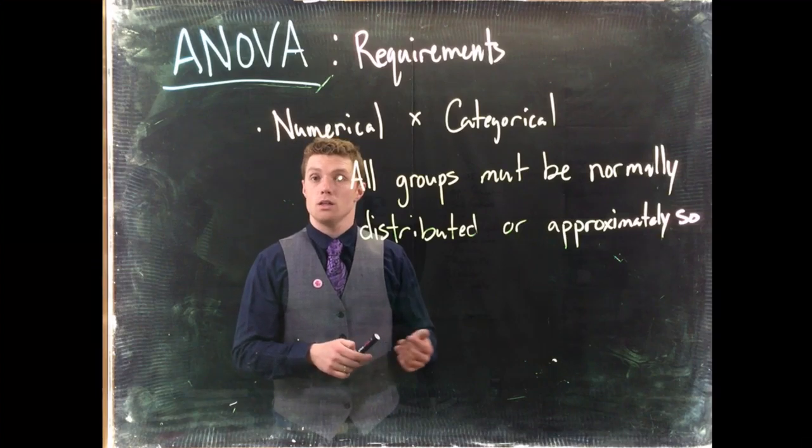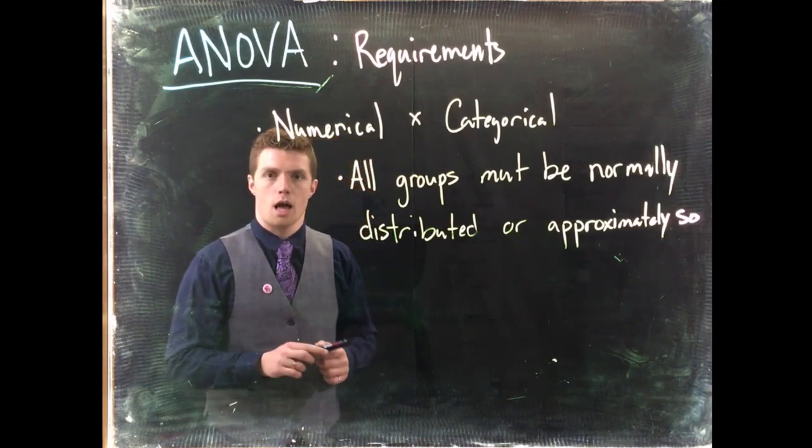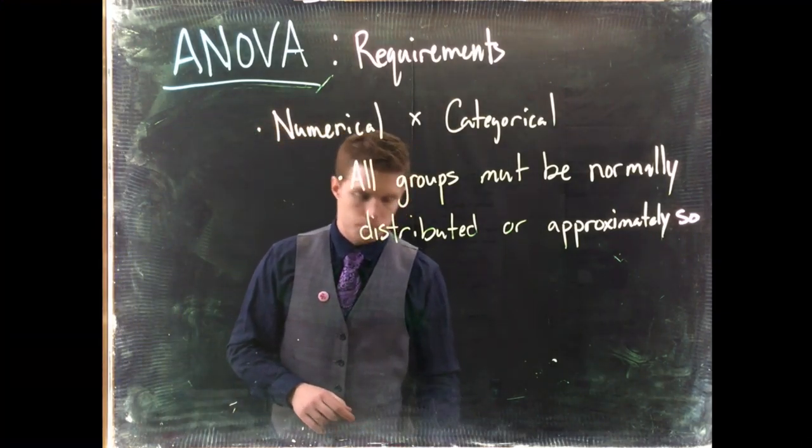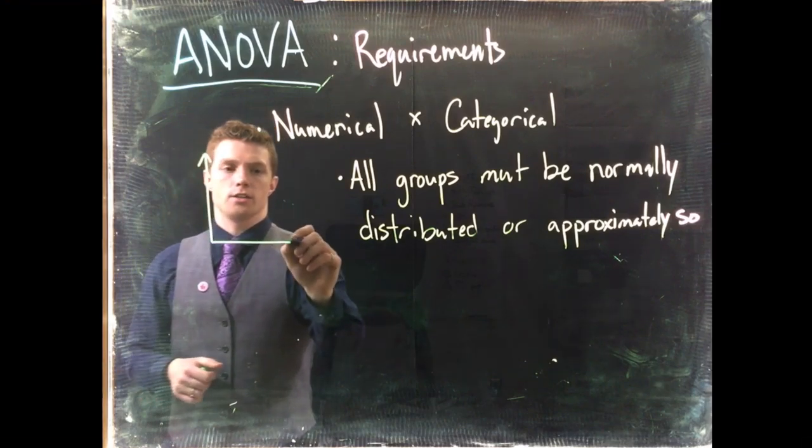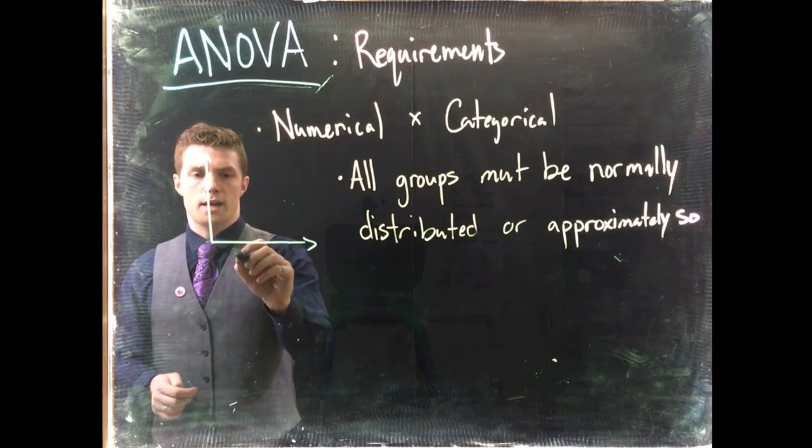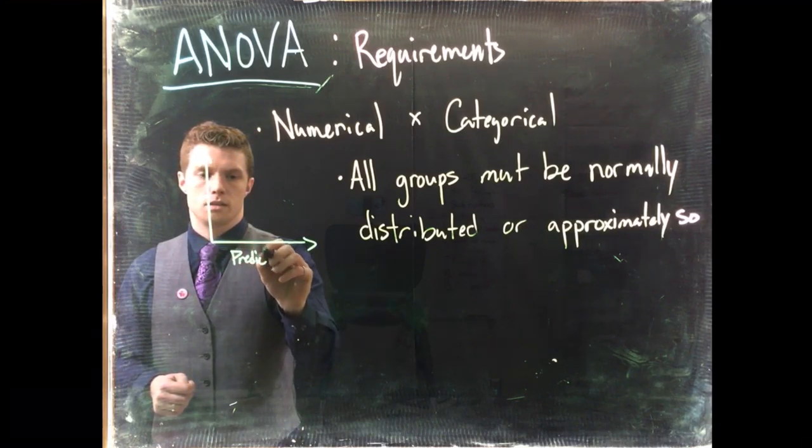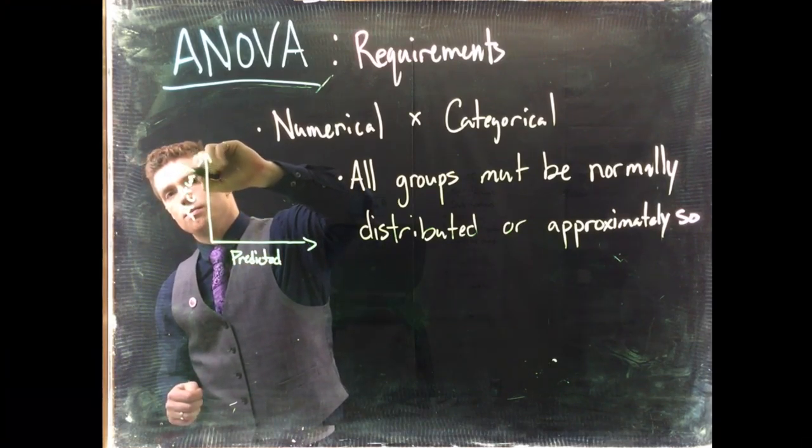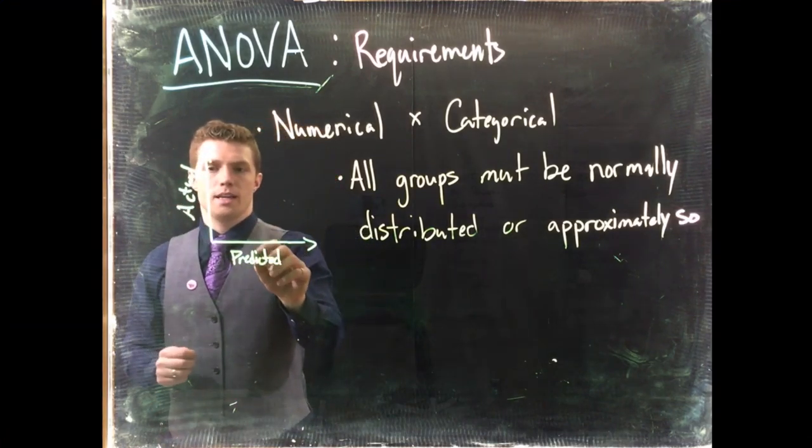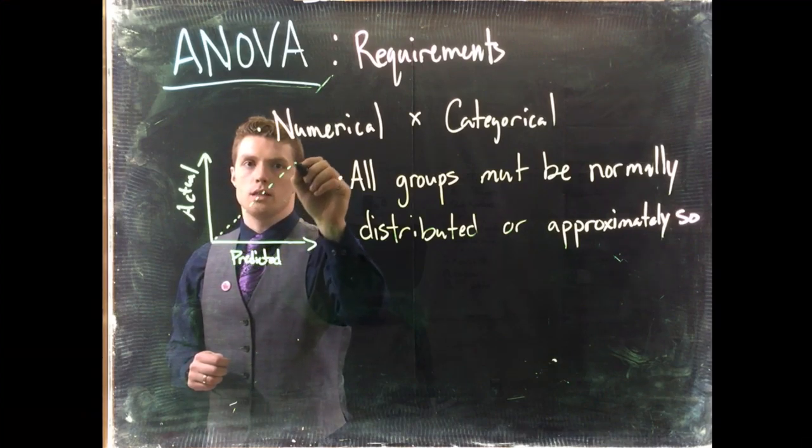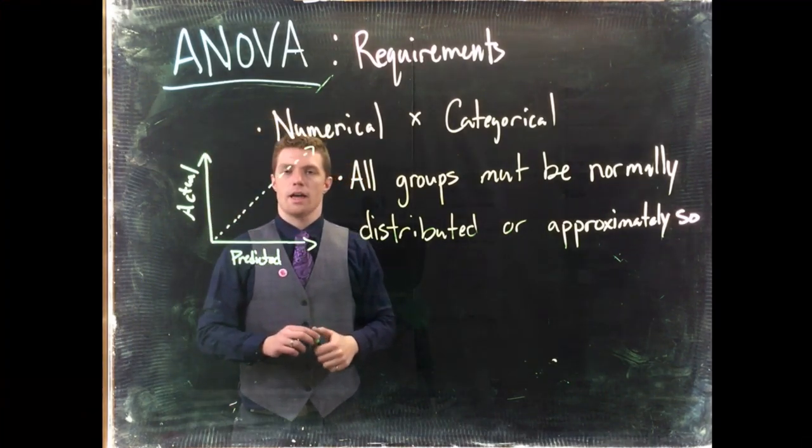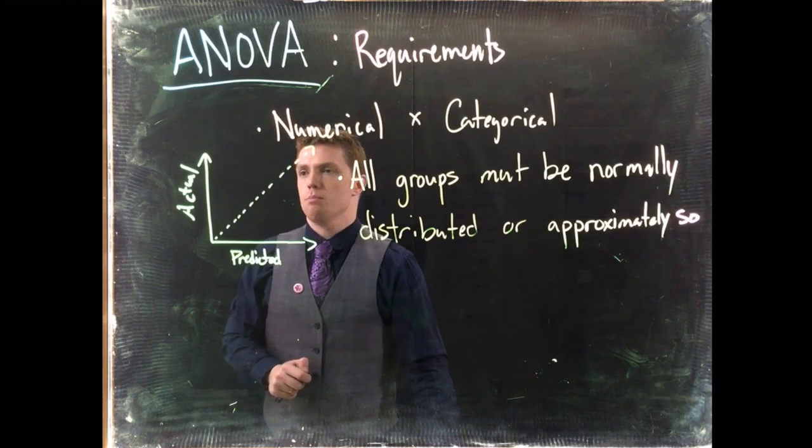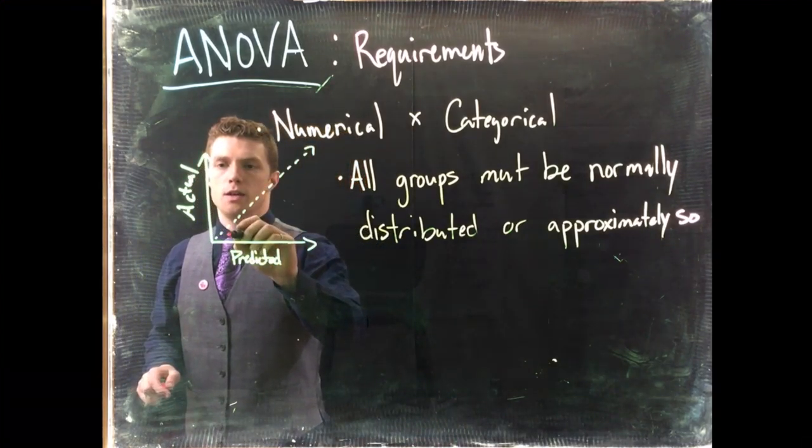One other way that we can do this is by looking at what are called QQ plots. So these are a residual plot. And the residuals are just the errors. And we basically are plotting the predicted error versus the actual.